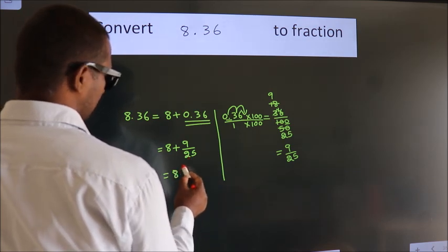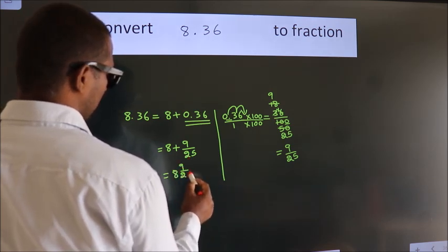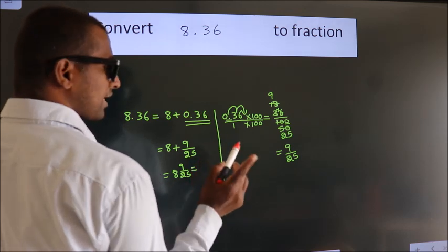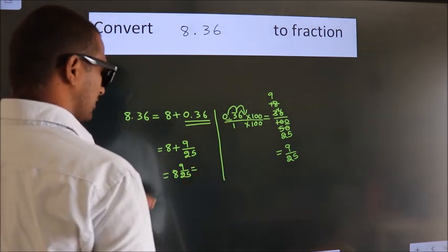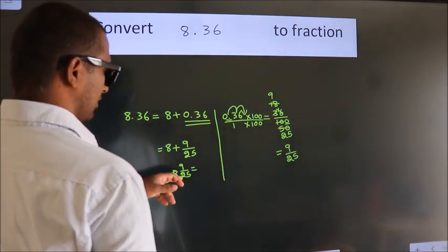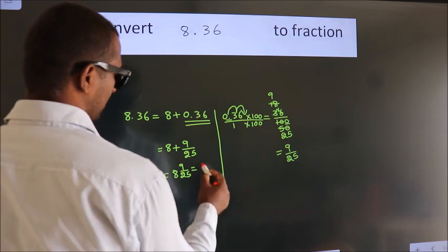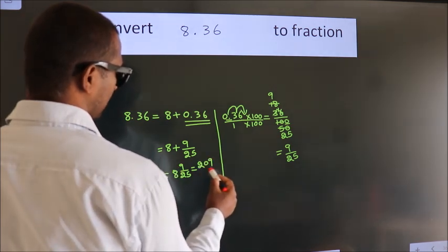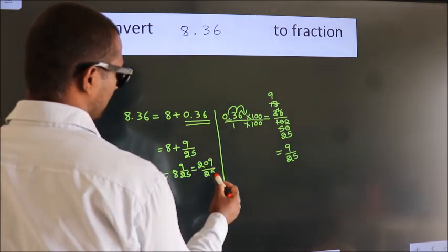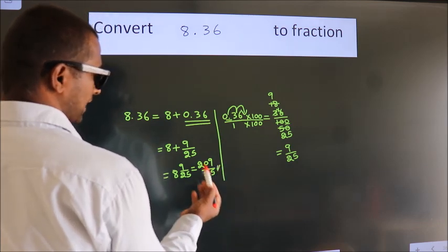In mixed fraction it is 8 and 9 over 25. And in improper fraction it is 8 into 25, 200 plus 9, 209 by 25 is our fraction.